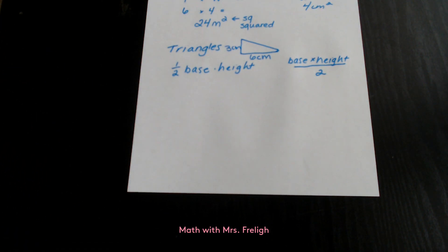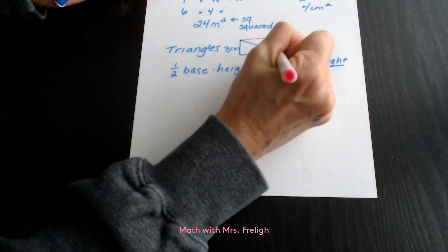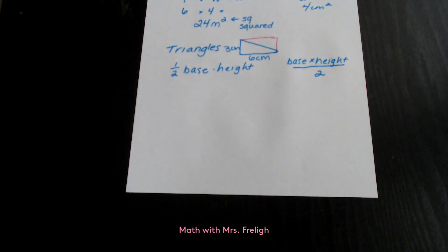When you think about a triangle, we have to either multiply by half or divide by 2, because a triangle is actually half of a rectangle or a square.